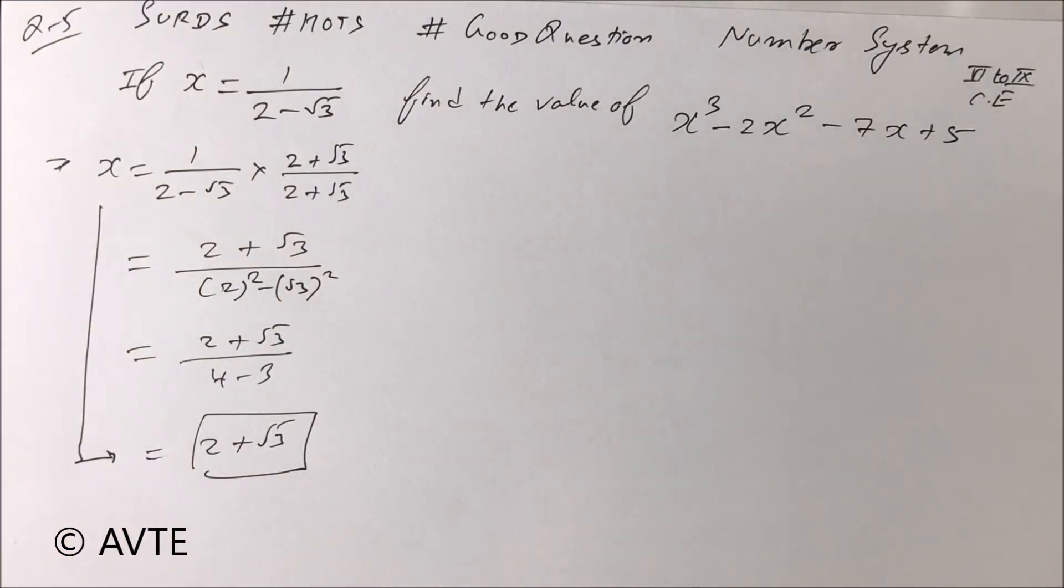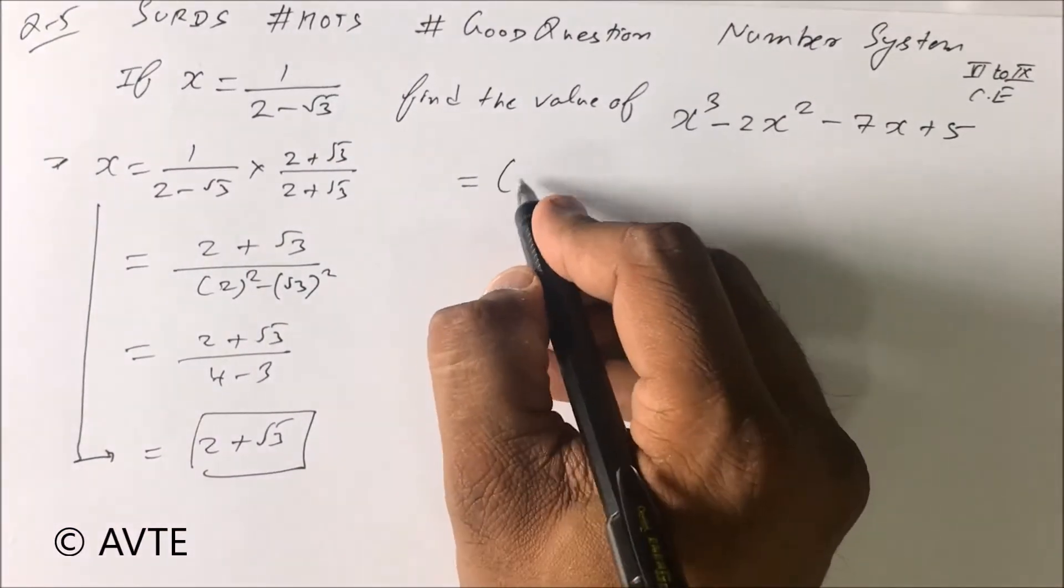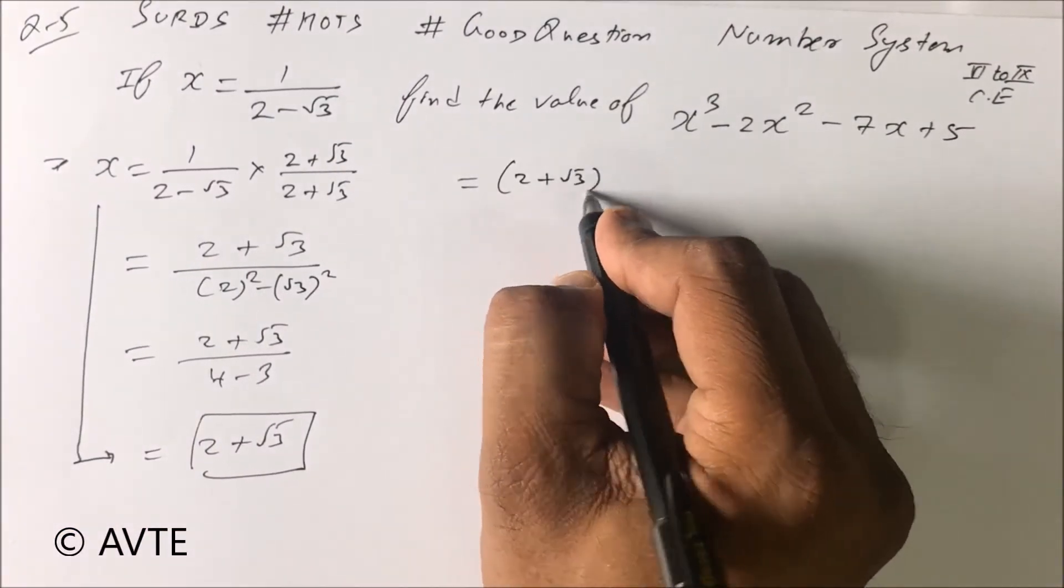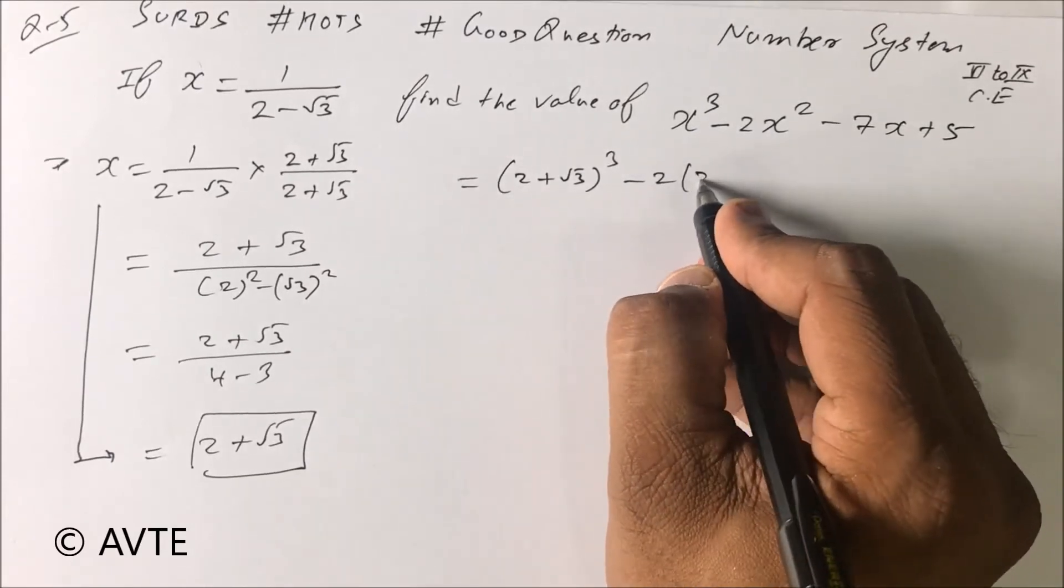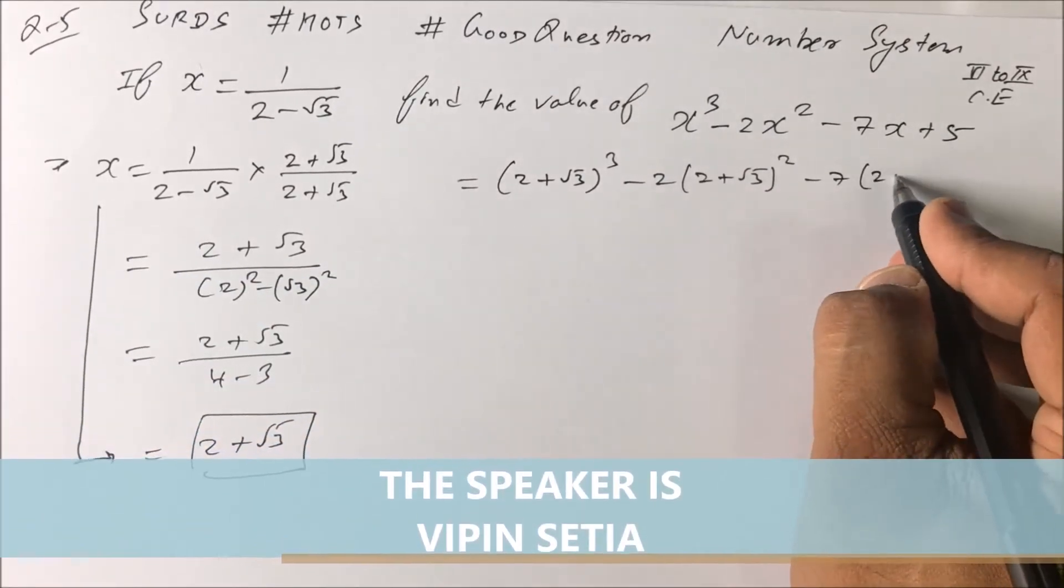We can do this question by several methods. One of the easiest one is: the value of X is 2 plus root 3, so just copy and paste - it's (2 plus root 3)³ minus 2(2 plus root 3)² minus 7(2 plus root 3) plus 5.